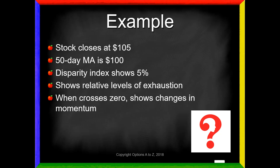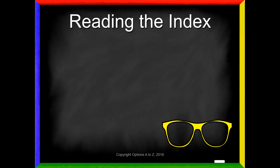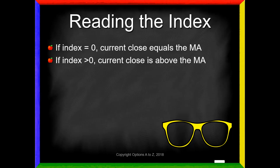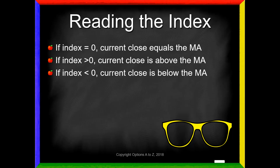We're going to look for crosses, and then look for relative highs and relative lows. Reading the index is pretty easy. If the index is at zero, the current close or current stock price equals the moving average you chose. If greater than zero, the current close is above that moving average — so if it shows plus five, the stock is 5% above the moving average. If the index is less than zero, showing a negative number, the current close is below the moving average. All we're looking for are relative highs and lows in percentages where the market tends to feel overbought or oversold.